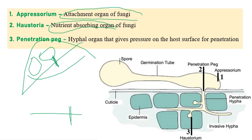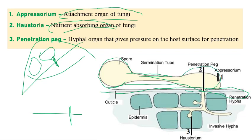If we see the general structure — this is a spore landing on the leaf surface. Once after landing, what will happen? It will start to germinate with the help of a germination tube. Then you can ask me directly, why can't the spore directly penetrate inside? It germinates and gives a germination tube, and it produces a structure called appressorium. Appressorium is the attachment organ of fungi.